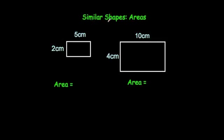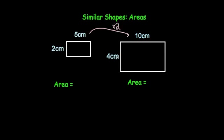In this video we're going to look at similar shapes and what happens with their areas. From previous videos you should have seen what similar shapes are, where one is an enlargement of the other. The rectangle on the right is an enlargement of the rectangle on the left, and the scale factor of enlargement is 2. To get from 5 to 10 you multiply by 2, and to get from 2 to 4 you multiply by 2.